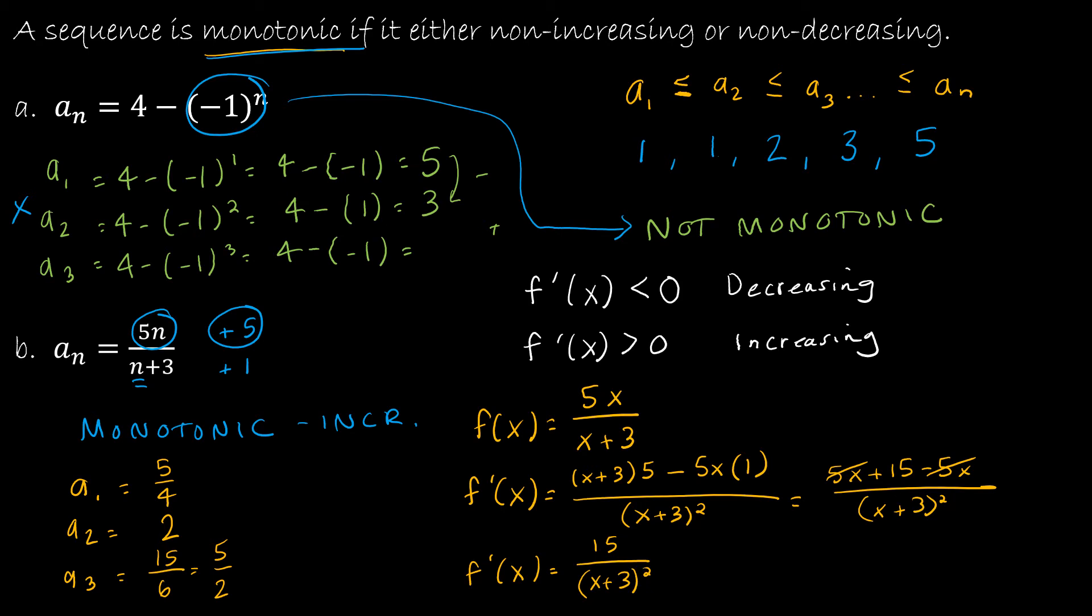And what that tells me is 15 divided by some quantity squared, that quantity always has to be positive. So a positive divided by a positive is always a positive. This value is always greater than 0. And because that derivative function is always greater than 0, then my function is always increasing, which is what I had determined anyway.